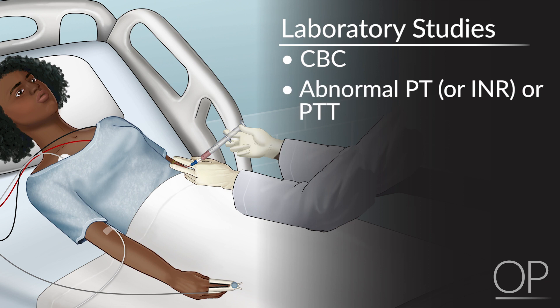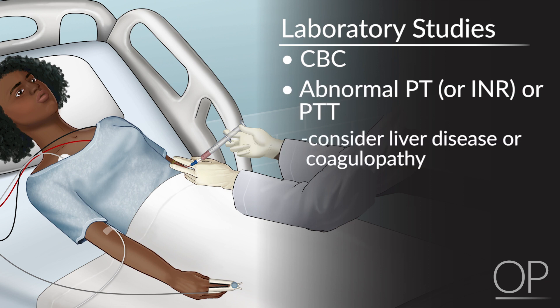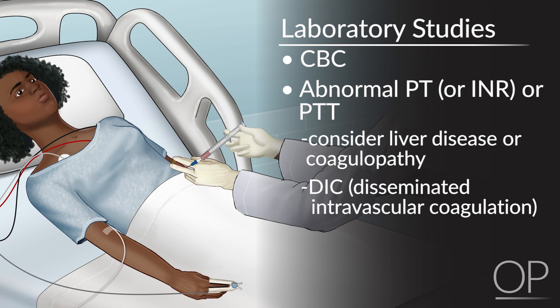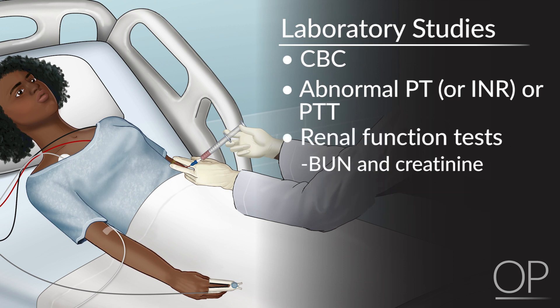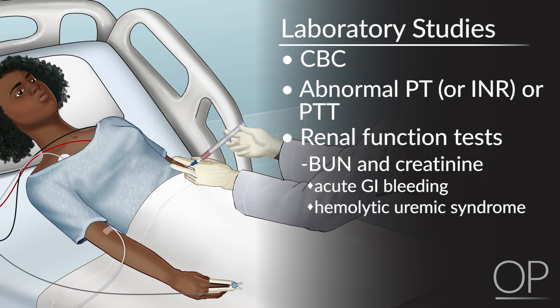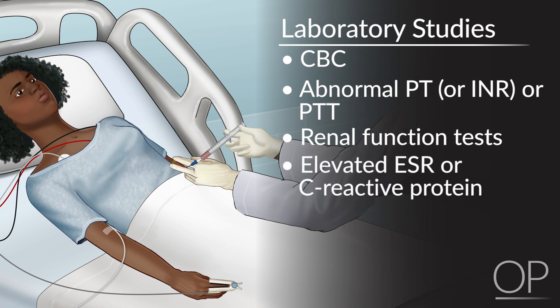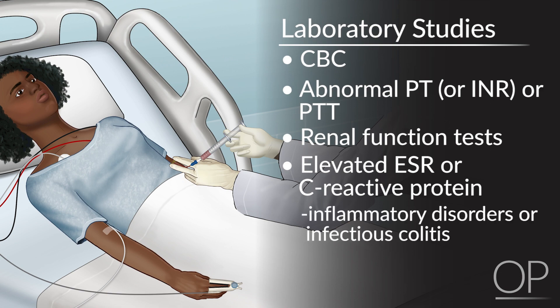Abnormal PT or PTT may suggest liver disease or coagulopathy. DIC can be considered in the appropriate clinical setting. Remember, BUN and creatinine are elevated in acute GI bleeding and can also be seen in hemolytic uremic syndrome and Henoch-Schönlein purpura. Elevated ESR or CRP can be seen in inflammatory or infectious colitis.